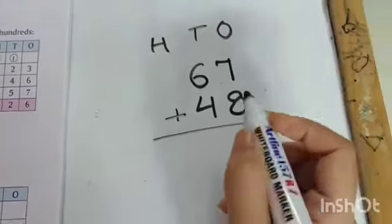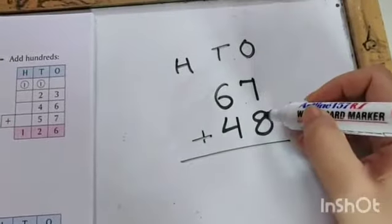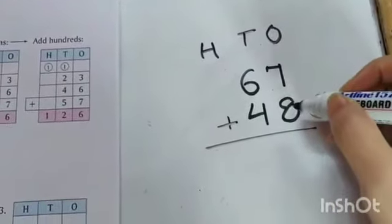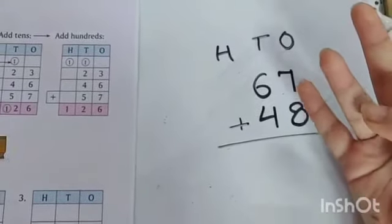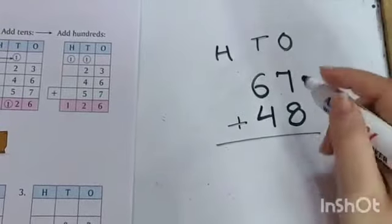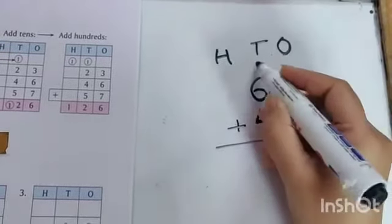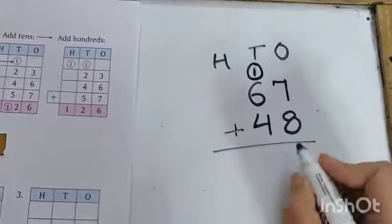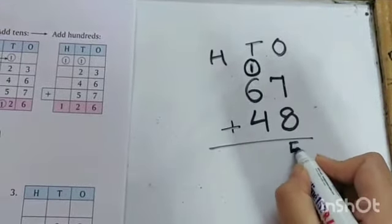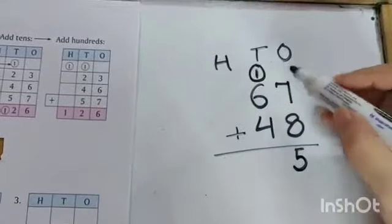7 plus 8, let's add with fingers. 8 plus 7: 8, 9, 10, 11, 12, 13, 14, 15. So 7 plus 8 equals 15. 1 carry to tens and 5 we write here in the ones column.